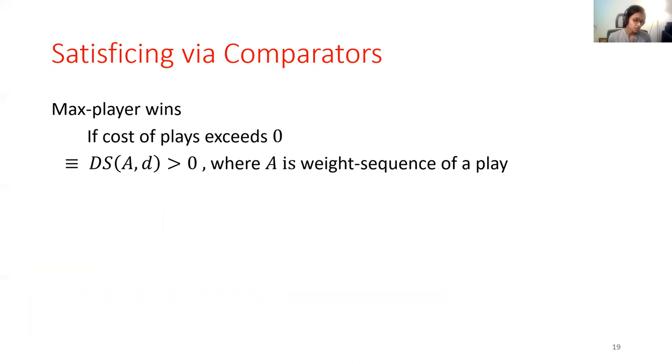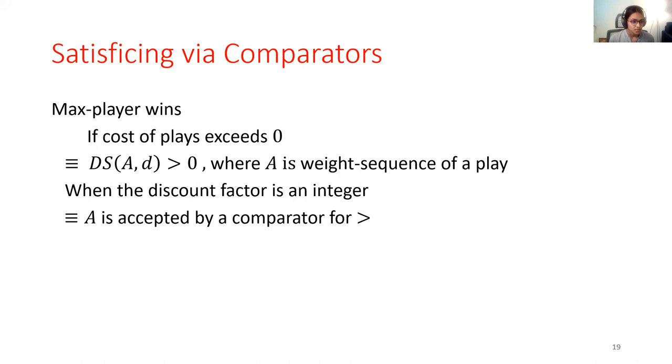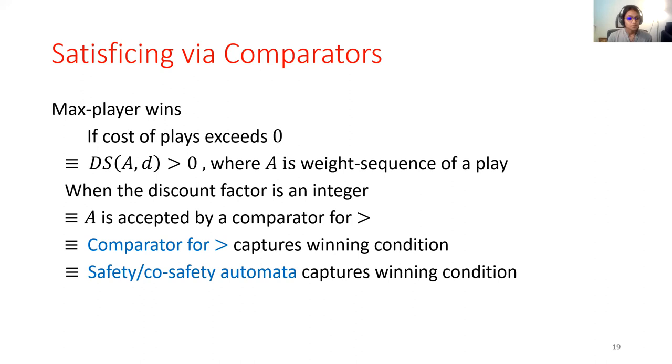So, given this knowledge of comparator automata, how do we incorporate it into solving satisficing? For the time being, let's assume that the threshold value is 0. So, a max player will win if and only if discounted sum of a sequence is greater than 0. When the discount factor is an integer, this is equivalent to saying that the weight sequence is accepted by an appropriate comparator. And thus, the winning condition for the max player is necessarily and sufficiently captured by the comparator automata.